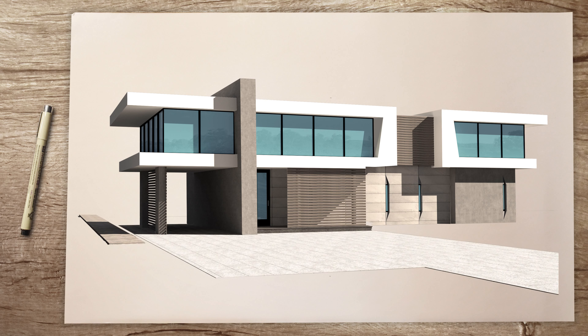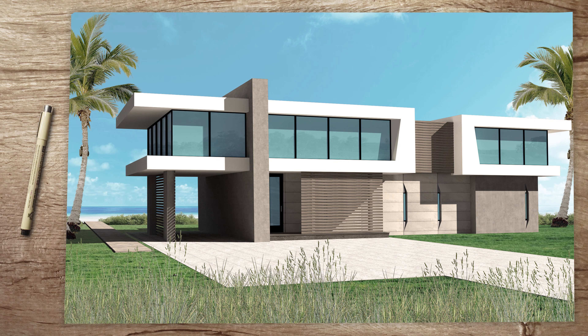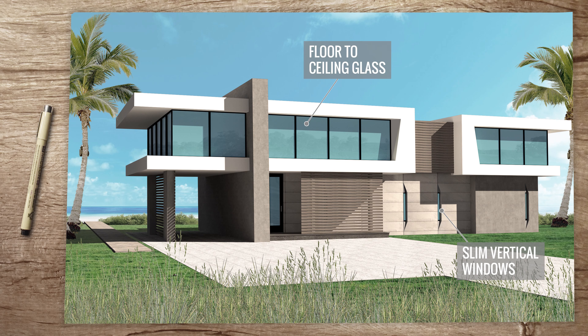We have the driveway here which is sort of a block system, and then a beach walkway to the left. Looking at the characteristics of the design, we see these slim vertical windows and we're going to go into detail on those in a bit. Then we have floor-to-ceiling glass on the second floor, which is a very common feature in modern homes — this allows for a lot of natural light to come in as well as creating a very simplistic design on the outside.